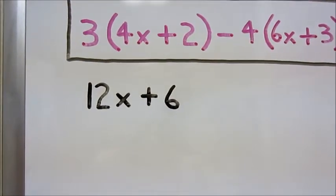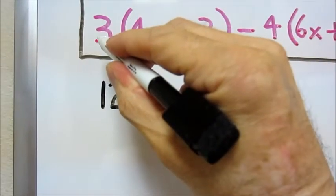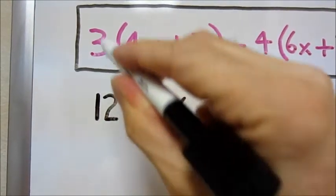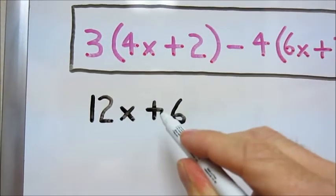For the first part of our problem, we take 3 multiplied by 4x to give us 12x. We then take 3 multiplied by 2 to give us 6.